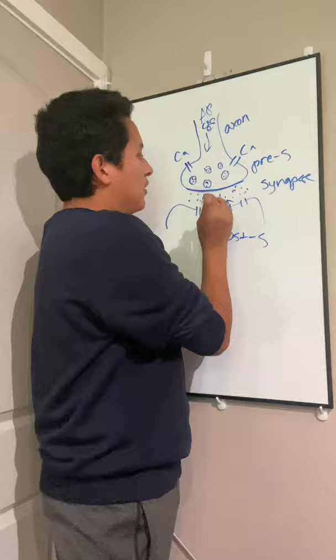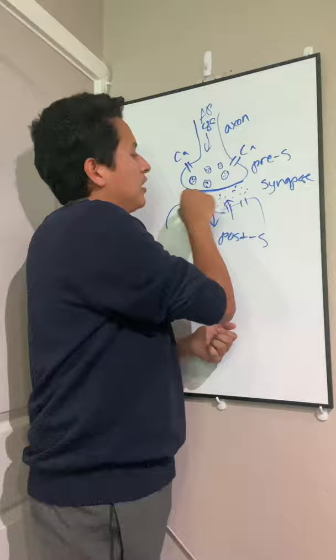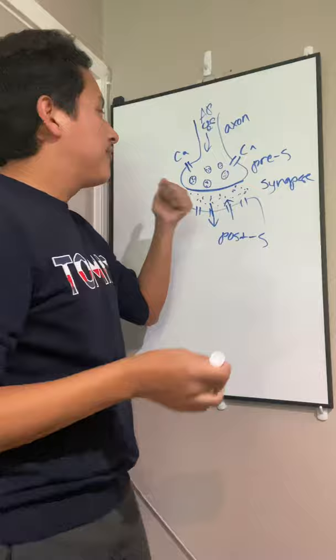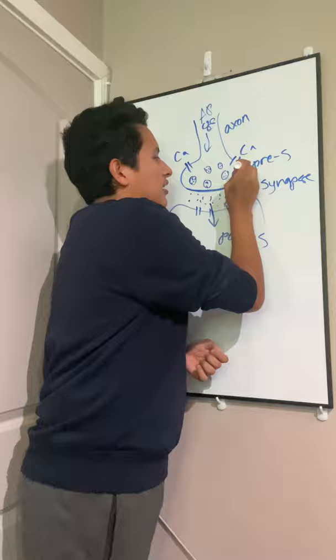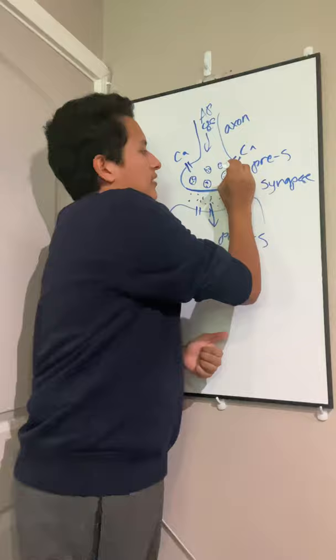In step five, we have enzymes in the synapse that break up these transmitter molecules—that's 5a. In 5b, these transmitter molecules are repackaged. They go back into the presynaptic terminal and are repackaged in a new synaptic vesicle to be recycled for the next process.